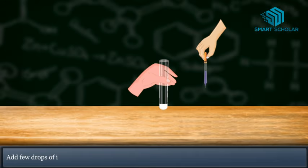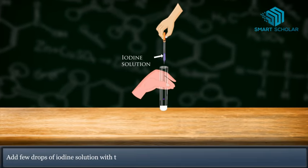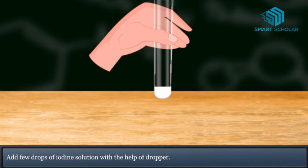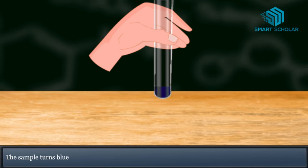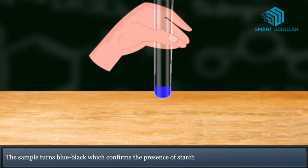Add a few drops of iodine solution with the help of a dropper. What do you observe? The sample turns blue-black, which confirms the presence of starch in rice.